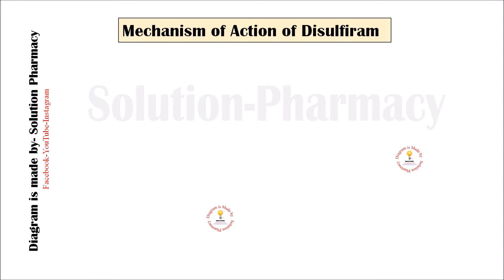Hello friends, welcome to the channel Solution. Today in this video we will tell you about the mechanism of action of disulfiram through animation. Disulfiram is used in the treatment of chronic alcoholism. Its basic mechanism is to interfere with the metabolism of alcohol in the body, which causes unpleasant reactions when alcohol is consumed.